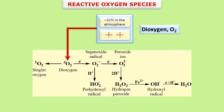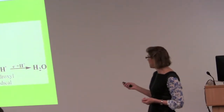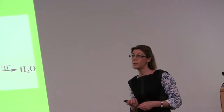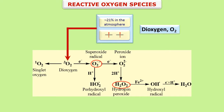Nearly 21% of our atmosphere is composed of oxygen. The molecule of oxygen in its ground state is a free radical because it has two unpaired electrons with the same spin quantum number. This spin restriction obligates oxygen to take electrons one at a time, and this gives rise to the generation of the so-called reactive oxygen species, which are harmful species that can damage cells.